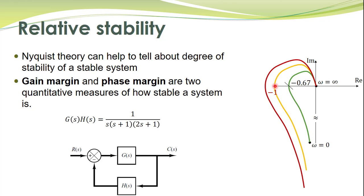For a particular value of gain, the graph will pass through the critical point and the closed loop system will be critically stable. This particular gain required to make the system critically stable is called the gain margin. For example, in this case, adding a gain equal to 1/0.67 makes the system marginally stable.